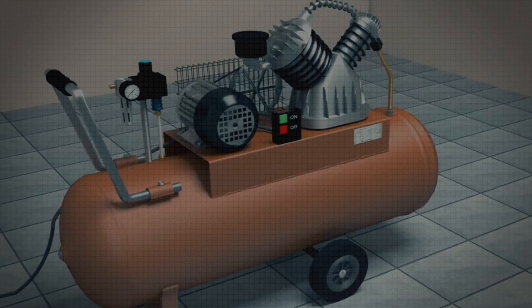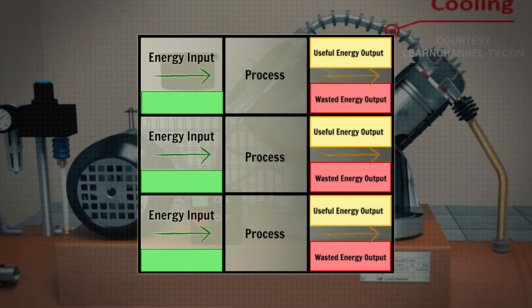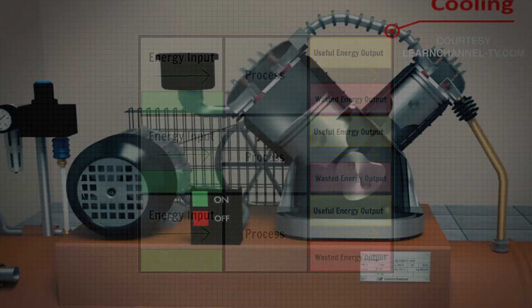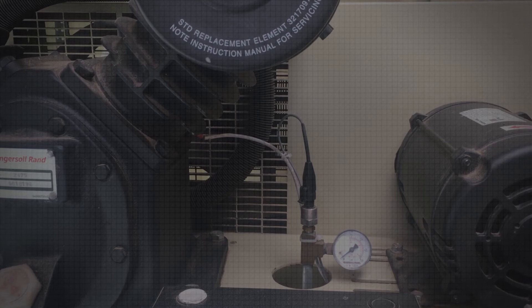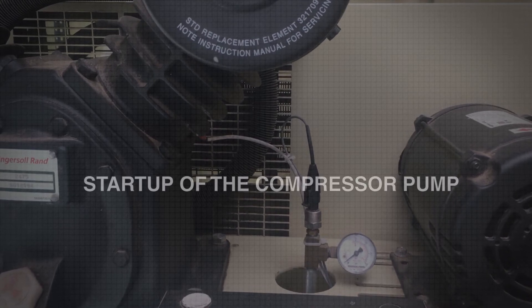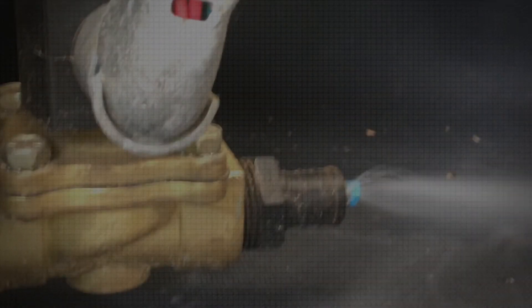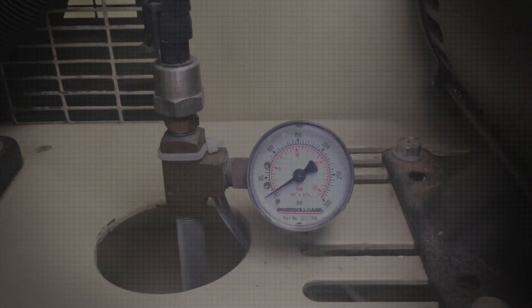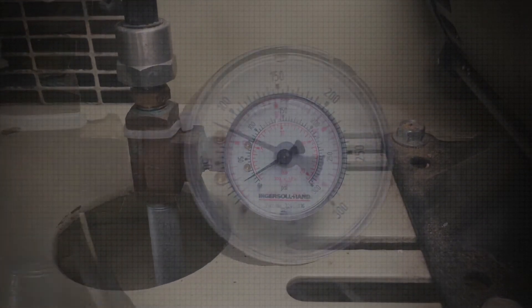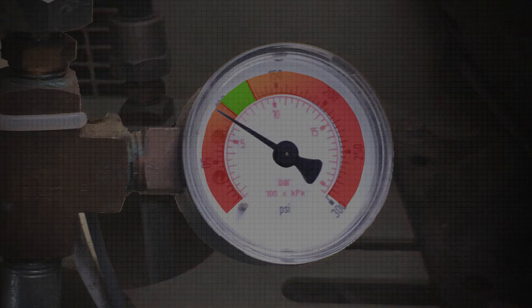There are three main areas of air compressor operation where energy is wasted that, when managed appropriately, will deliver an immediate and sustained improvement on energy savings. The most energy waste occurs during compressor pump startup, followed by how often and efficiently the expansion tank is drained of condensate. The third way energy is wasted is by how accurately and consistently the pressure band gap is maintained during operation.